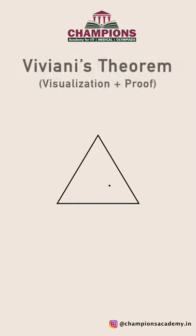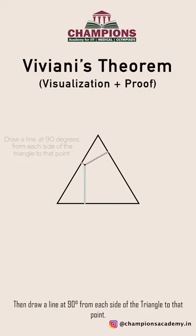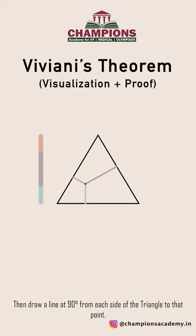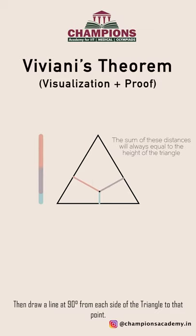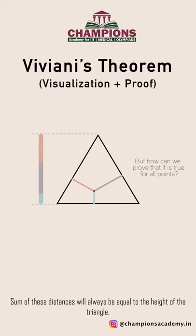Viviani's Theorem with visualization and proof. Pick any point inside of an equilateral triangle, then draw a line at 90 degrees from each side of the triangle to that point. The sum of these distances will always be equal to the height of the triangle.